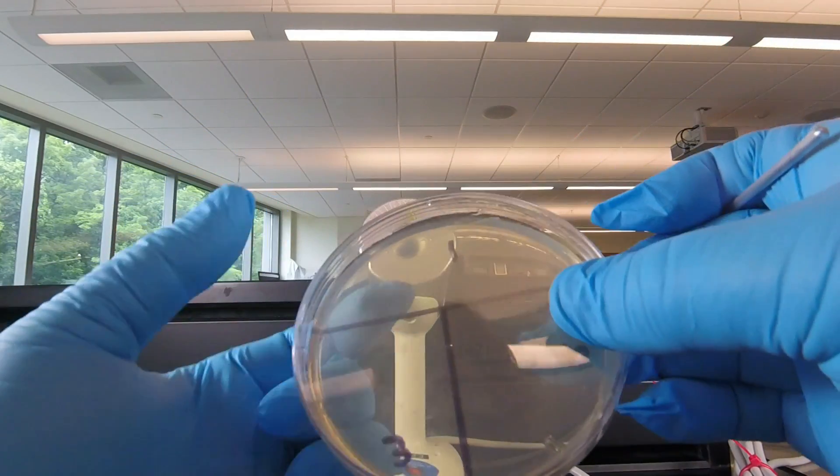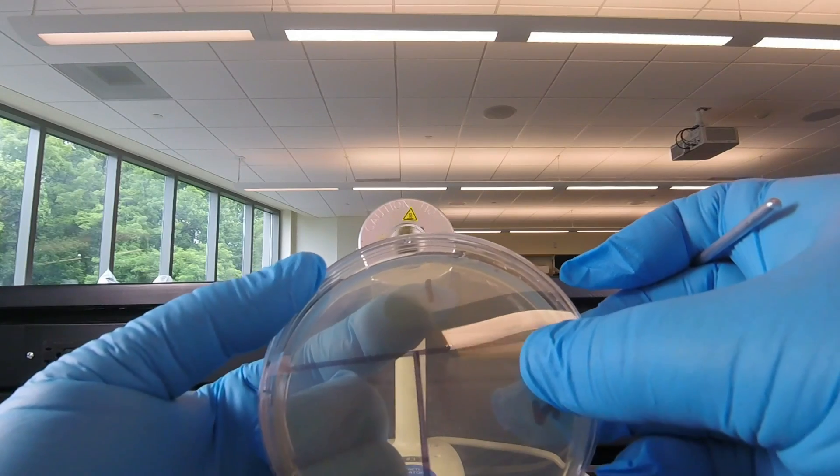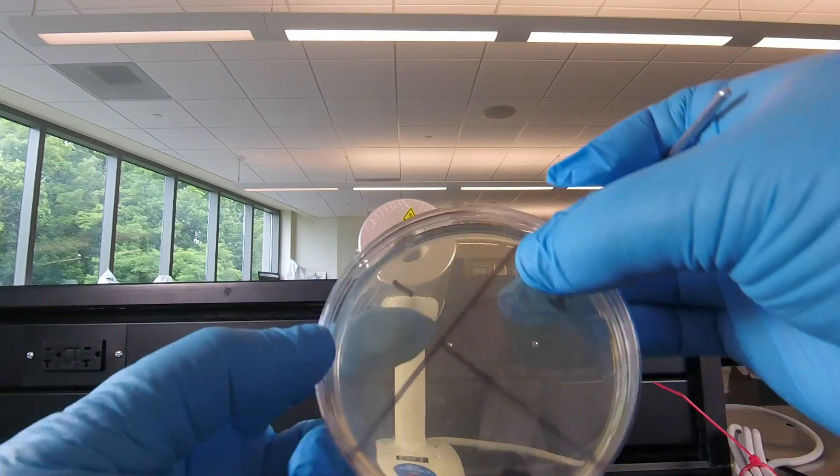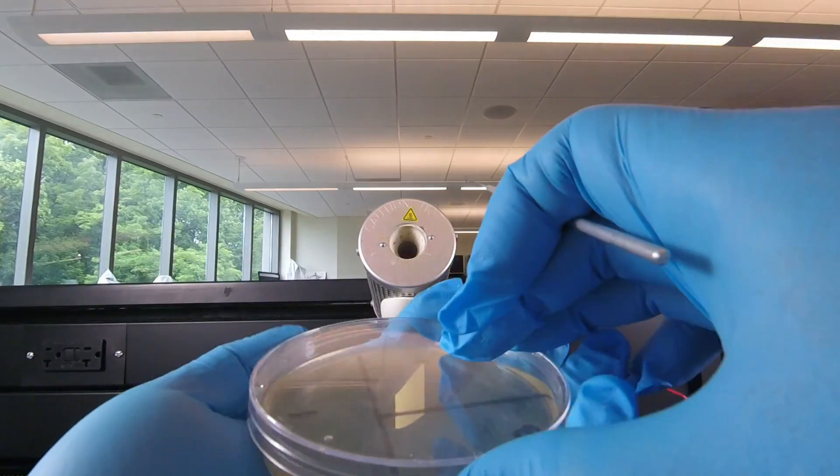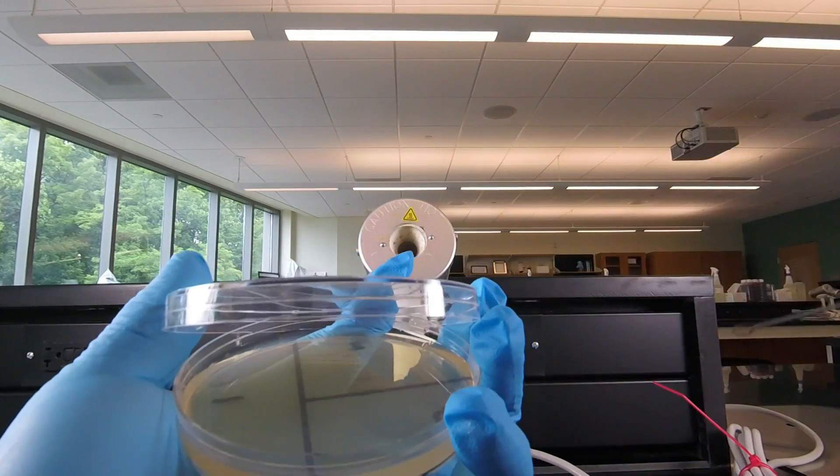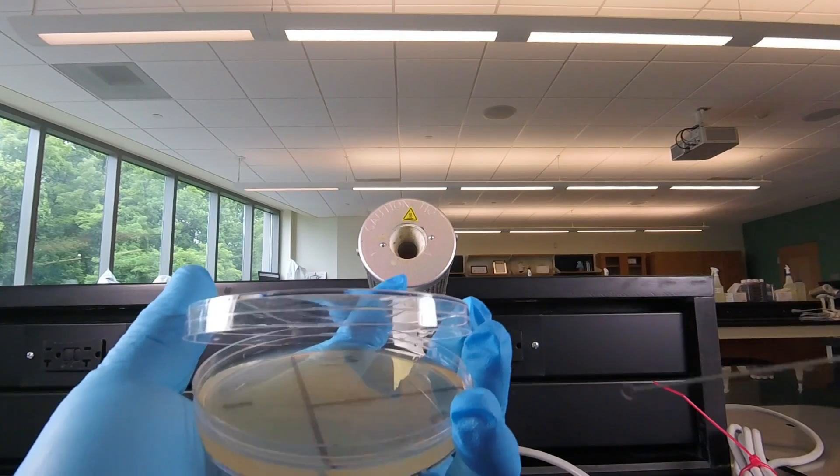Now we're going to rotate the plate so the bacteria we put on area one instead of sitting at 12 o'clock is sitting at nine o'clock. Then we can spread some of the bacteria that we put on sector one over sector two.